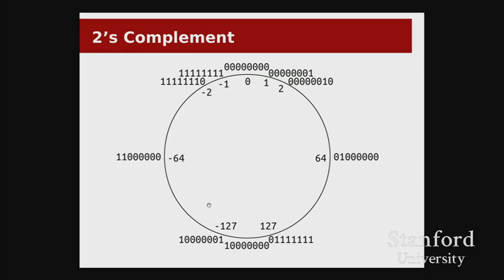One more piece to complete the circle: what do we put at the six o'clock position? Coming from the right clockwise, you'd expect positive 128. Coming from the left counterclockwise, you'd expect negative 128. Our convention has been that if the most significant bit is one, that's a negative number, so it's consistent to put negative 128 there. This means there's now a discontinuity at a different place — at the bottom — where if I take 127 and add one, I jump to negative 128.